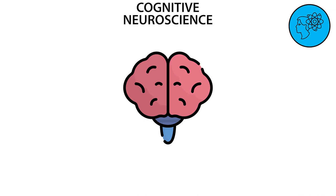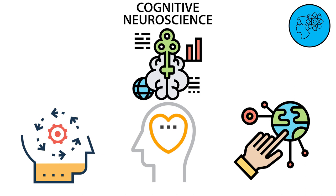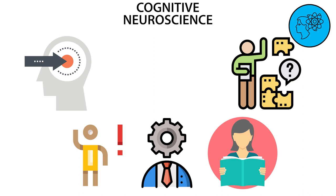Cognitive neuroscience is the science that studies the relationship between the brain and cognitive processes. Cognitive processes are everything we do when we think, feel, and interact with the world. These include things like perception, attention, memory, learning, problem-solving, and creativity.